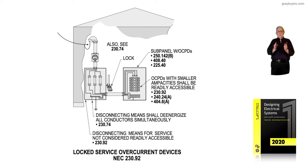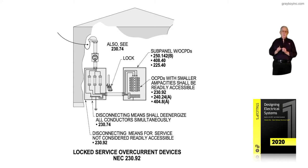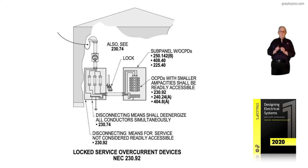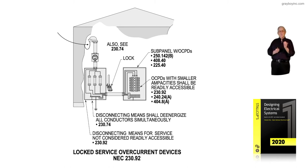We said yes — the only ones that would have to be readily accessible, speaking of fuses or overcurrent devices, would be in the panel board that you see to the right. And they definitely would have to comply with 230.92, 240.24A, and 404.88.